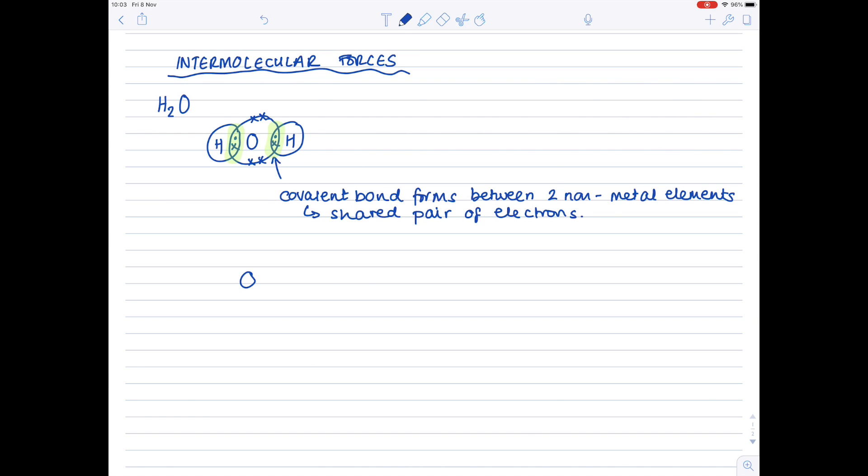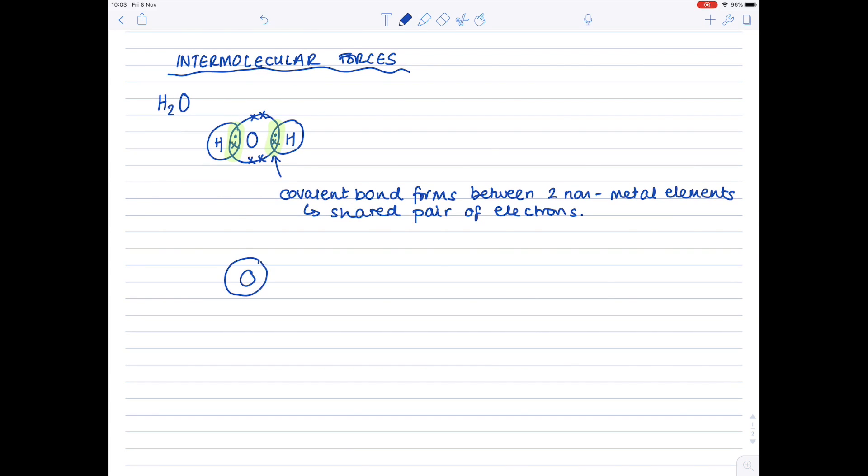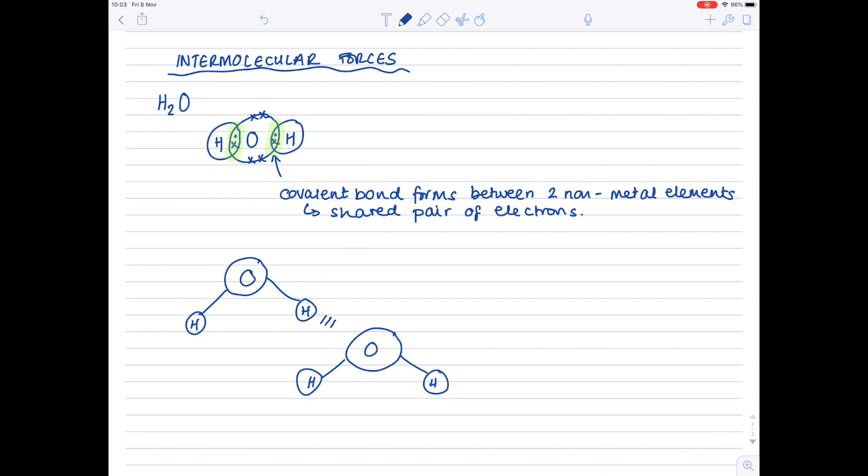So I'm going to redraw my water, but effectively, as it would look if I'd made the structure out of model kits, which you may have done in the lab. So there's one water molecule. There's a second water molecule. Now, between water molecules, there are attractions. With water, it occurs between the hydrogen and oxygen atom.